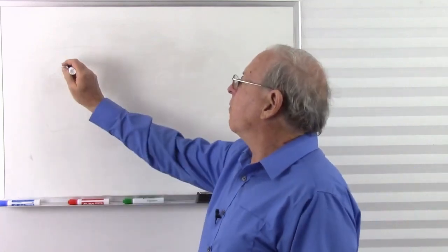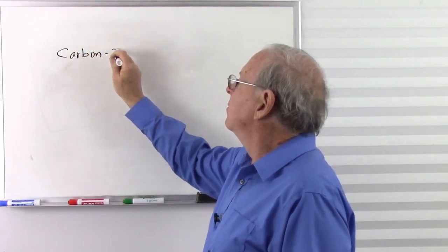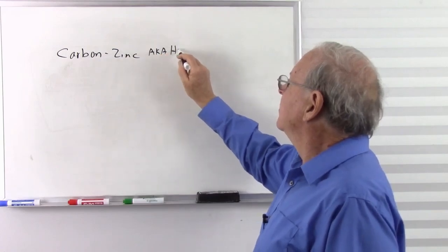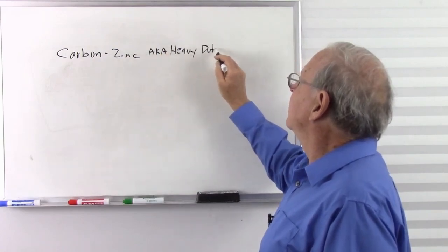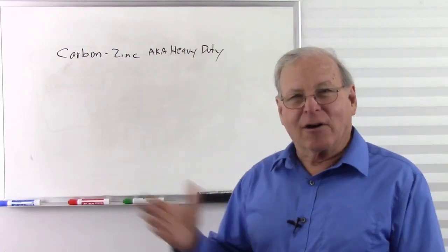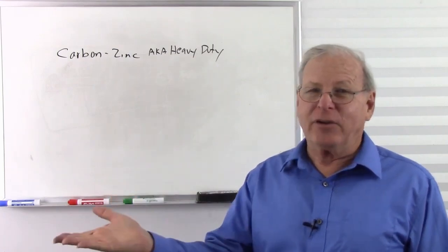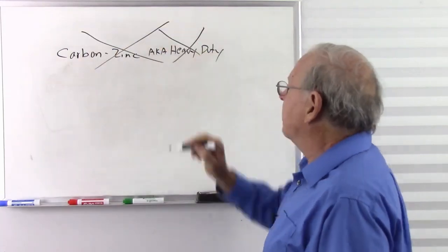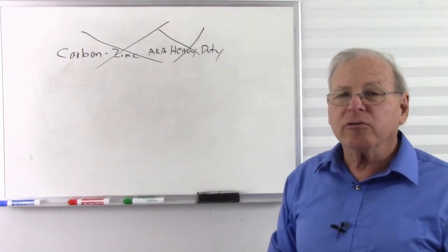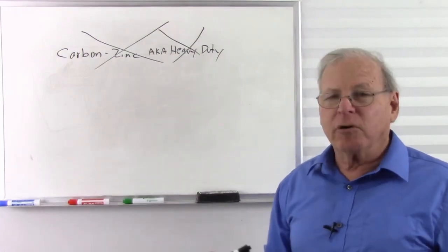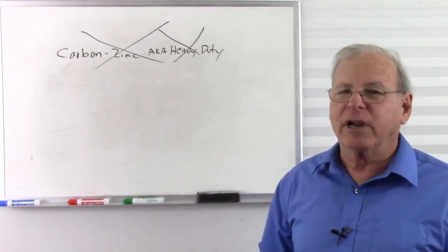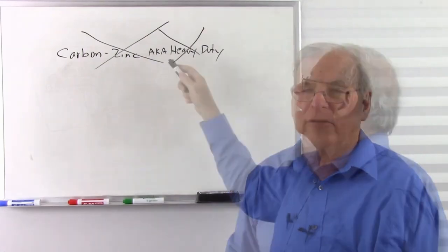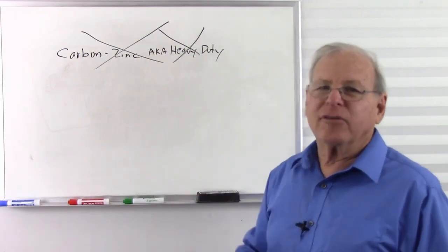Perhaps the oldest one around is the carbon-zinc, also known as heavy-duty. So when you go to buy batteries and see expensive alkaline batteries and cheaper heavy-duty batteries — stay away from carbon-zinc or heavy-duty batteries. They are prone to leak, they don't last very long, and when they do leak they produce a brown goo that gets into everything and ruins whatever they were put in. Do not buy carbon-zinc batteries. If they say heavy-duty, they're carbon-zinc — don't buy them.